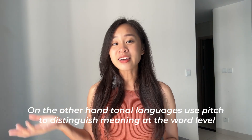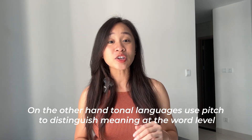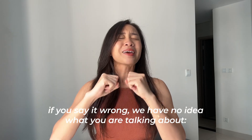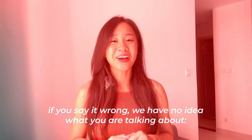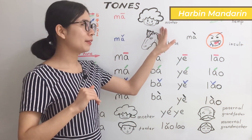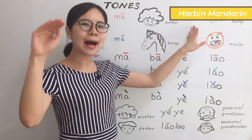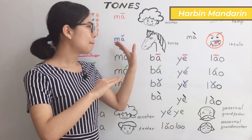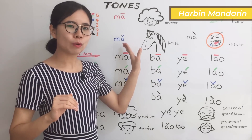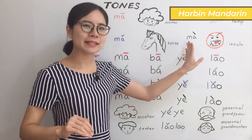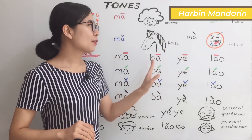On the other hand, tonal languages use pitch to distinguish meaning at the word level. So if you get it wrong, we may have no idea what you're talking about. 'Ma' means mother. 'Ma' means hemp. 'Ma' means horse. And 'ma' means insult.